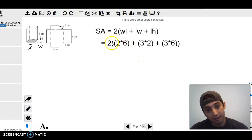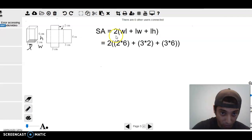So now we have the two times six, which is our width and length, three times two, which is our length and width, and three times six, which is our length and height. And then you just got to solve from here.